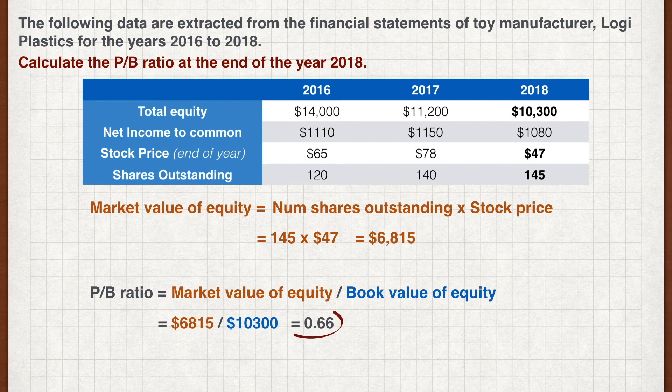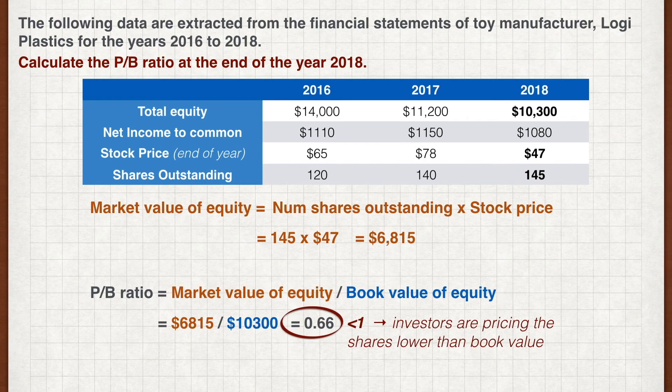Notice that this figure is lower than 1, which means investors are pricing the shares lower than their book value. This could be due to investors being pessimistic about future growth of the company.